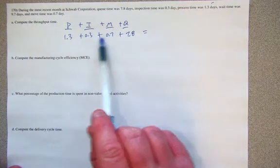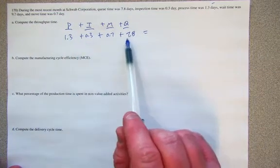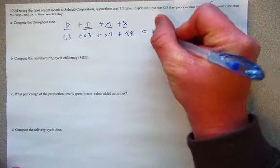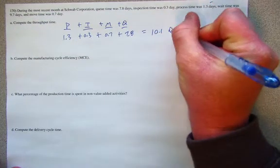So, if we add this up, here we have 1, 2.3, plus 7.8, we've got a throughput time of 10.1 days.